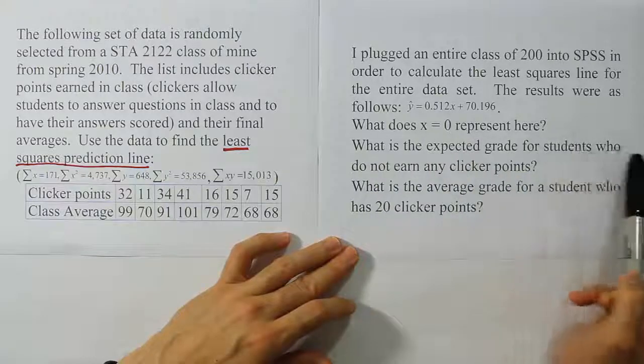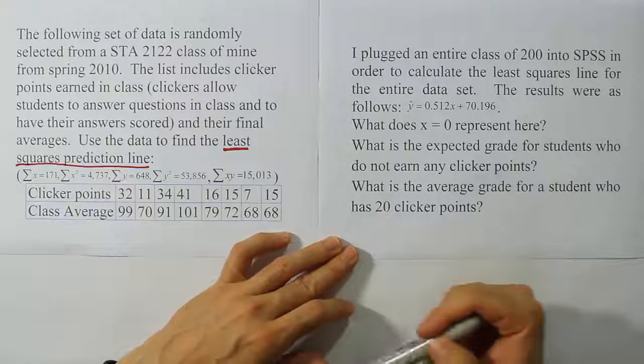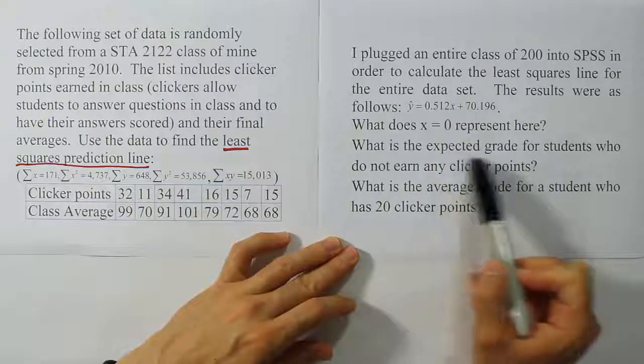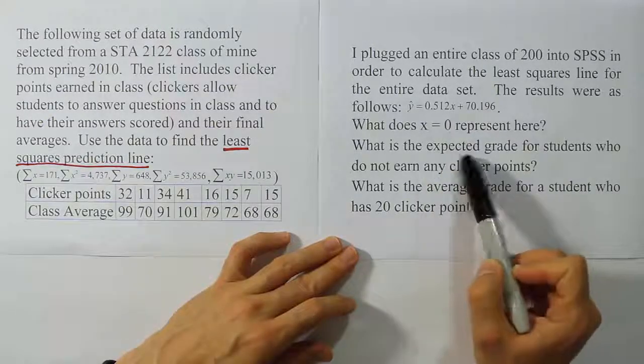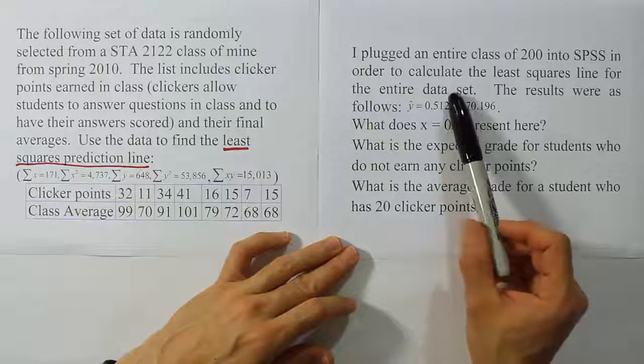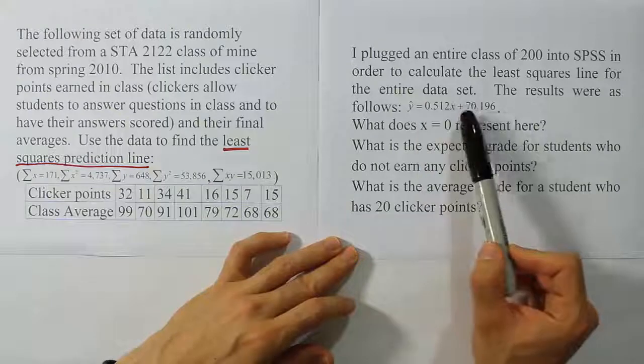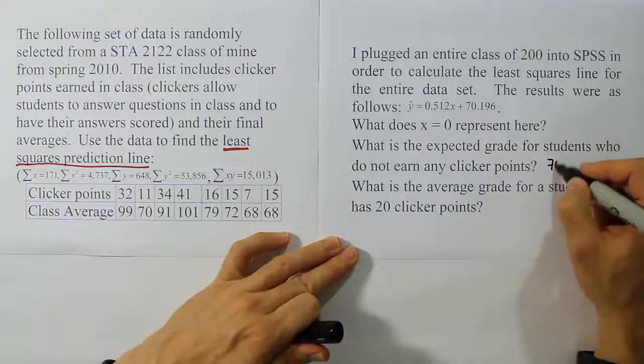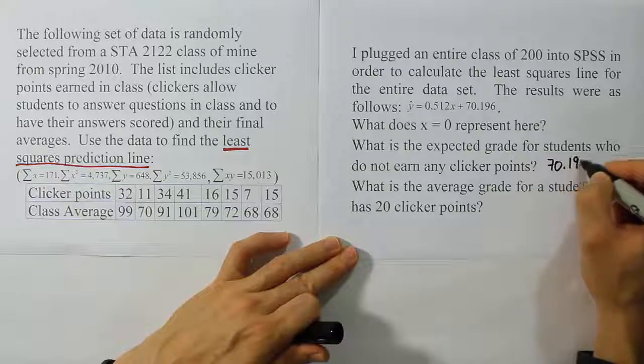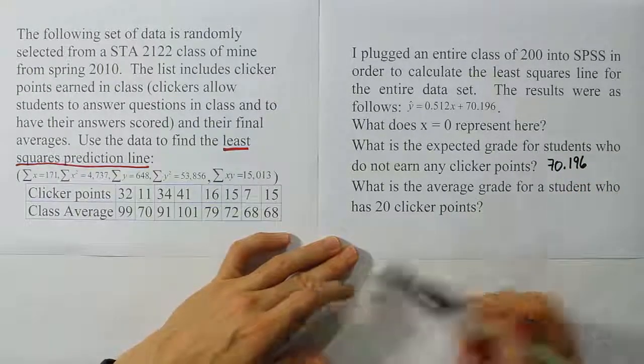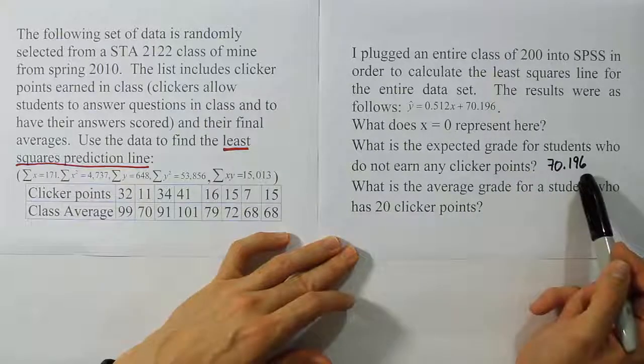What is the expected grade for students who do not earn any clicker points? Well, all we have to do here is enter in 0. The expected grade is the same as the average grade. Remember, expected value is the same as average value. If I put 0 in for X, that will cancel out this term, leaving 70.196. So the answer for this question is 70.196. That means about a C or so, a low C. In fact, almost the minimum C.